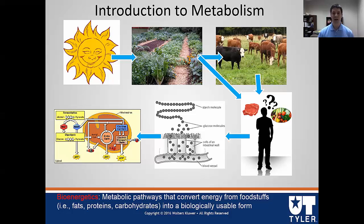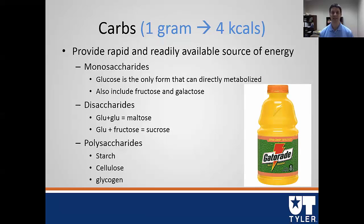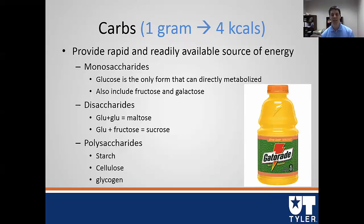Let's start with probably the most important source of energy: carbohydrates. They are important because they provide a rapid and readily available source of energy. We keep a good store of carbohydrates in the form of glycogen, which the body will rapidly use to create ATP using glycolysis and the Krebs cycle. One gram of carbohydrates provides four kilocalories of energy. Carbohydrates can be found in many forms: mono-, di-, and polysaccharides — mono meaning one, di meaning two, and poly meaning many.